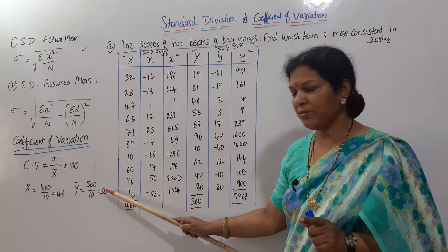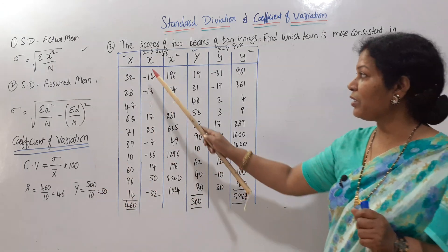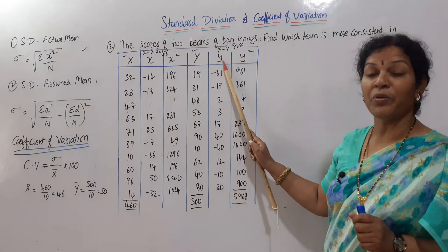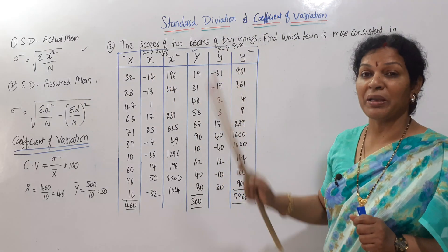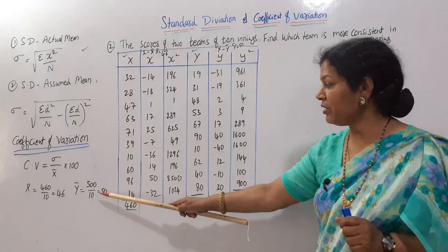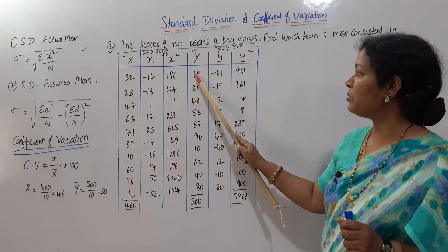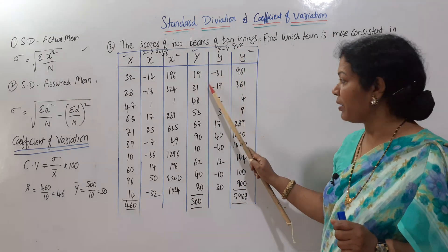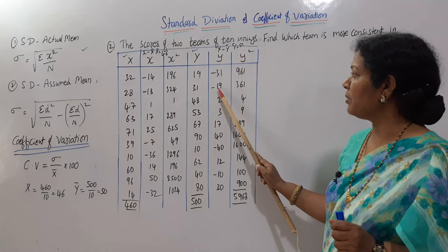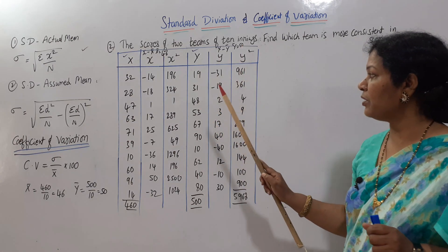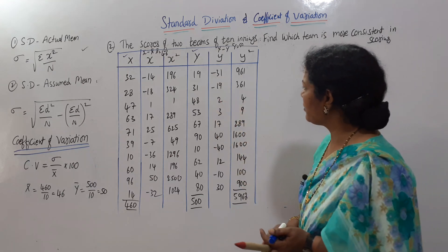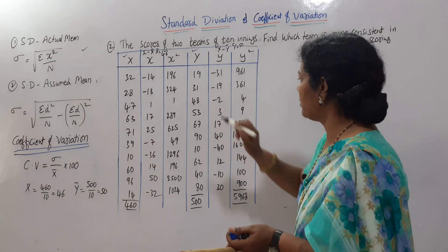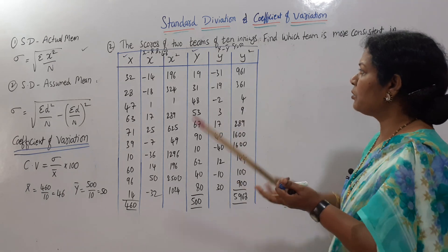Now for small y, we calculate y minus ȳ. ȳ is 50. So: 19 − 50 = −31, 31 − 50 = −19, 48 − 50 = −2, and so on. Like this we get all the small y deviation values.